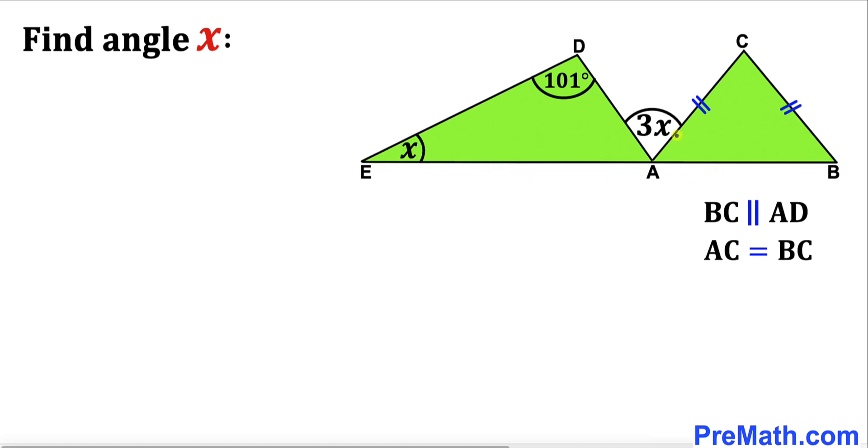Moreover, this angle D is 101 degrees, and this line segment AC is equal to this line segment BC. These lines BC and AD are parallel to each other.